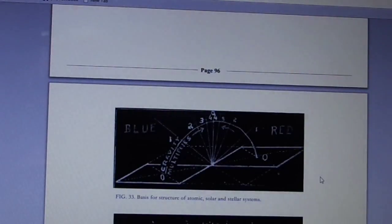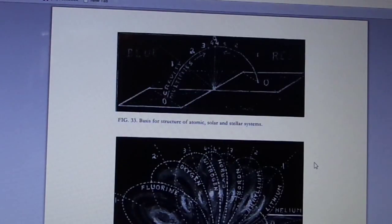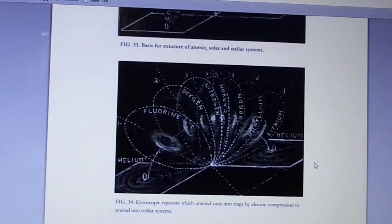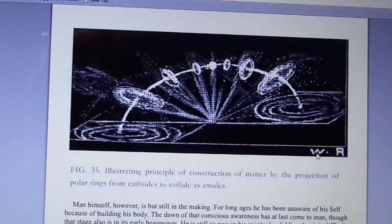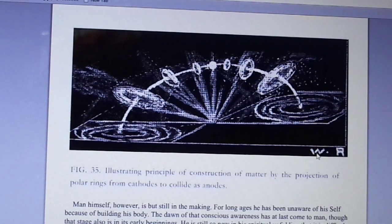And now for a few charts. Basis for structure of atomic, solar, and stellar systems. Let you look at these gyroscopic equators which unwind suns into rings by electric compression to rewind into stellar systems. And here's another diagram illustrating the principle of construction of matter by the projection of polar rings from cathodes to collide as anodes.